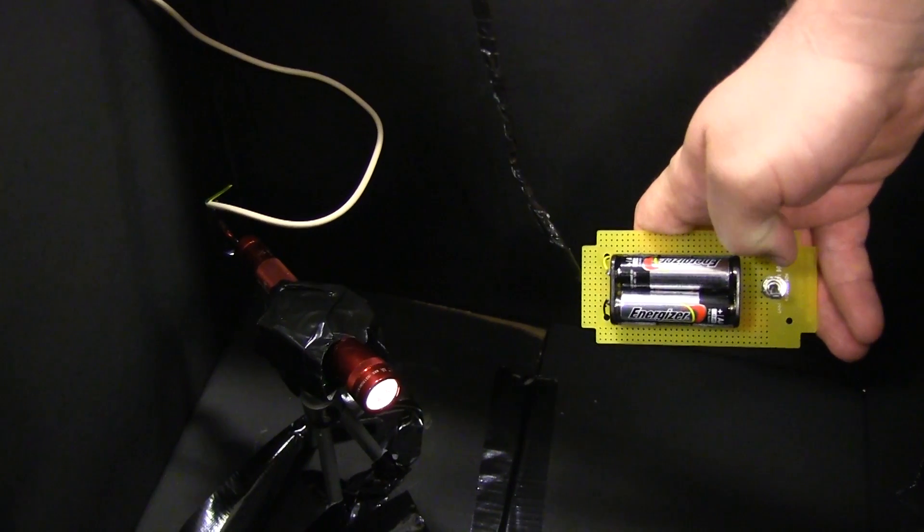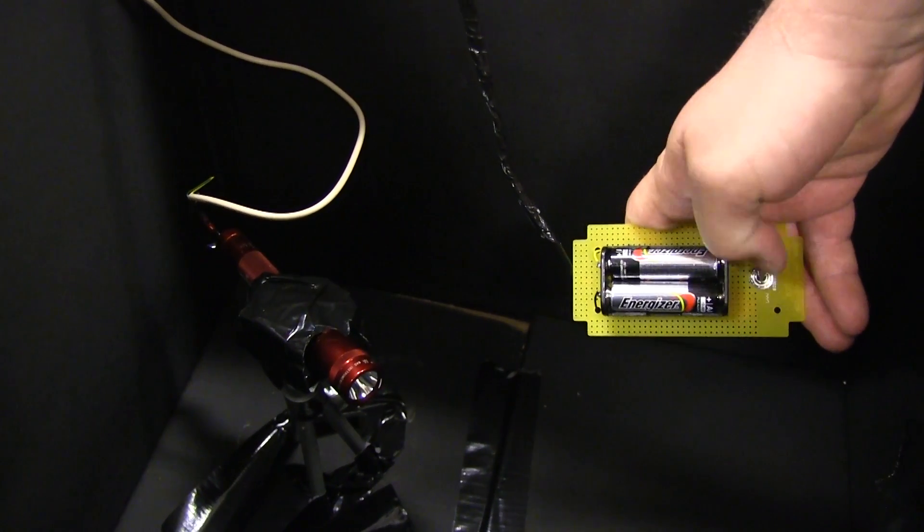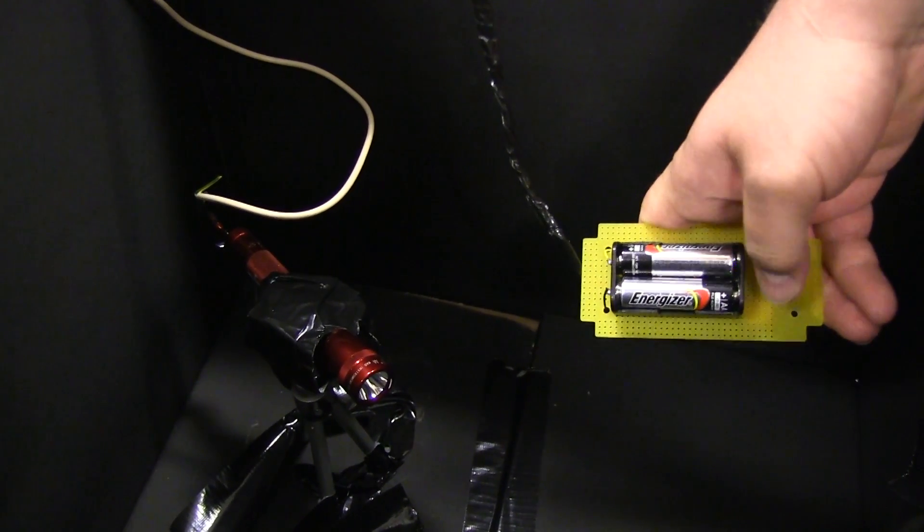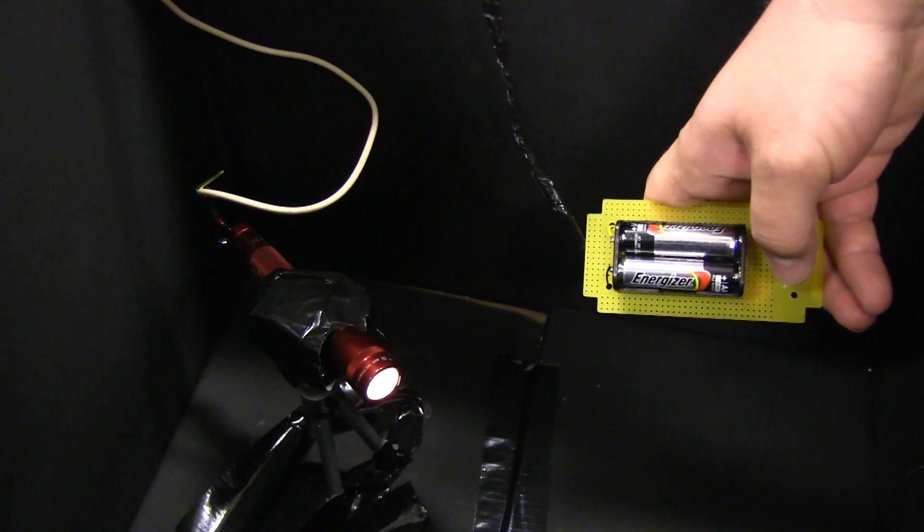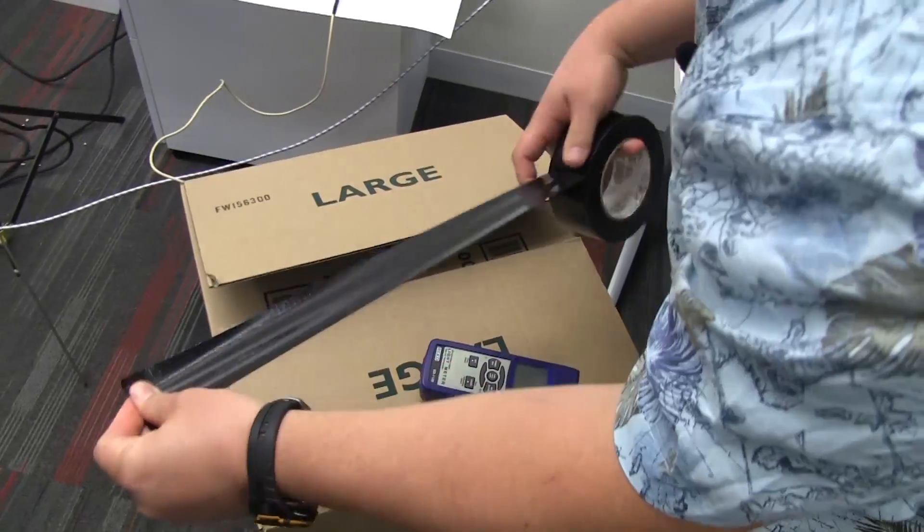To test and replace the batteries without disturbing our darkroom setup, we connect an external battery holder to the flashlight through a hardwire and place it outside the box.